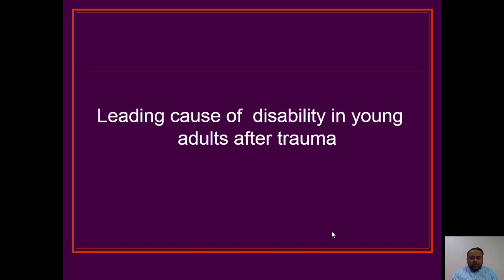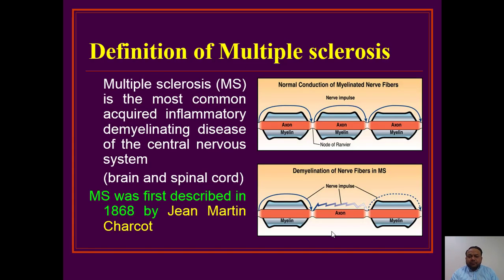Today I will discuss multiple sclerosis. Multiple sclerosis is the leading cause of disability in young adults after trauma. It usually affects young people, that's why it's a leading cause of disability. Multiple sclerosis is the most common acquired inflammatory demyelinating disease of the central nervous system — brain and spinal cord. The most common cause of central nervous system demyelination is multiple sclerosis.